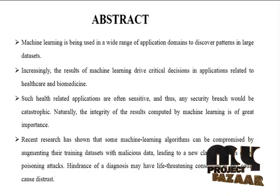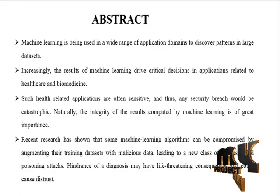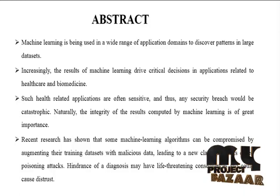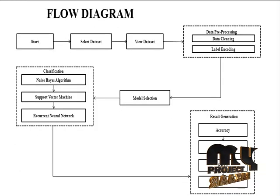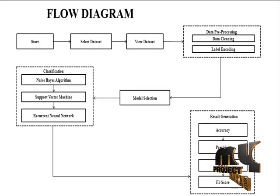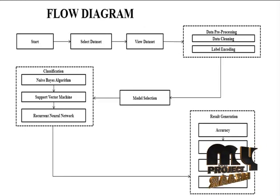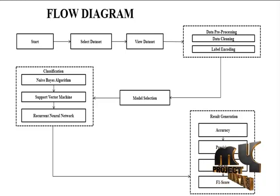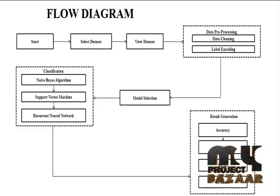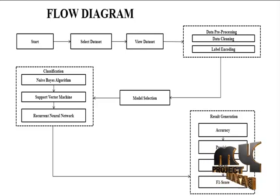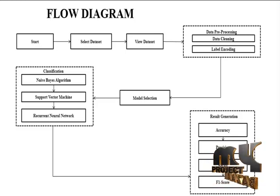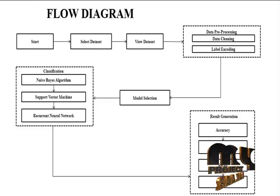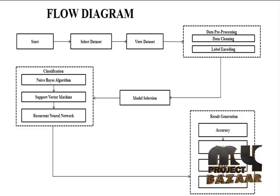Hindrance of diagnosis may have life-threatening consequences. The flow diagram of the project is: first we start the program and select the KDD99 dataset. Then we use the sample dataset in our console working directory. Then it will process into data pre-processing, where we are using a data cleaning method and label encoding method.